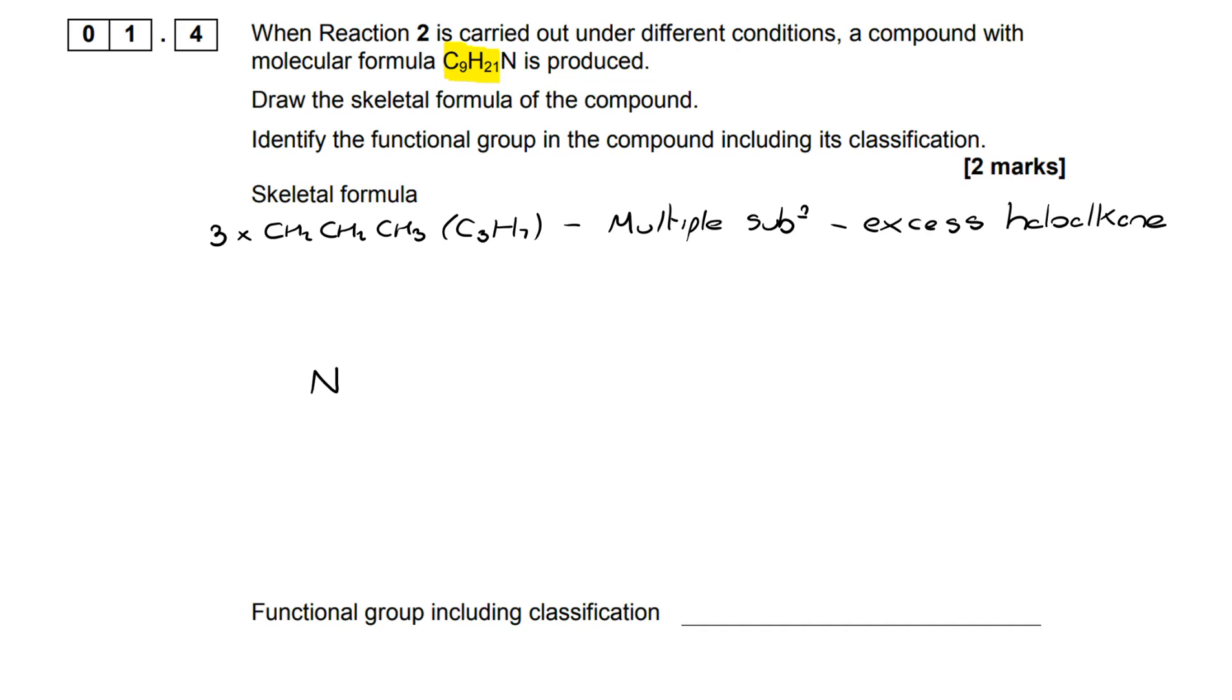So to draw it I'm putting my N at the centre. I'm reminding myself it's skeletal formula, so I'm showing three propyl groups coming from it. And because it's three alkyl groups coming from it, that means it's a tertiary amine and we get the second mark on there.